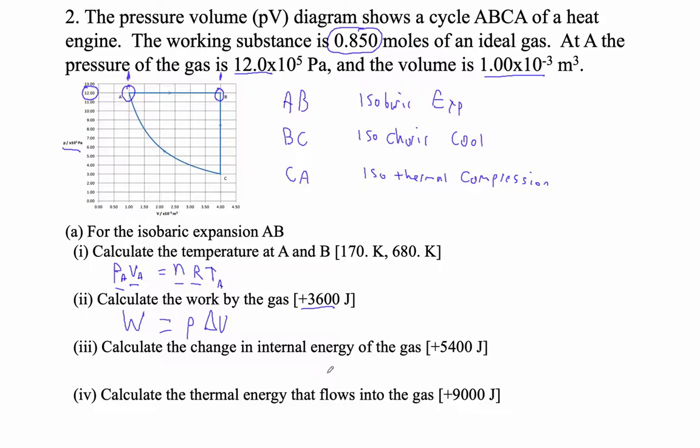Calculate the change in internal energy of the gas. There's two ways you can do that. You can go change in U is 3 halves nR change in T, and you have the two temperatures there. But of course, you can also say, since nRT is PV, you can also do 3 halves P delta V. And since you've already calculated P delta V, can't you just go 3 halves times the answer you just got there? That's what it is.